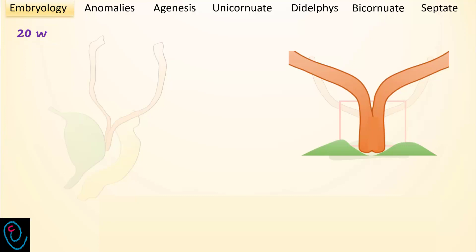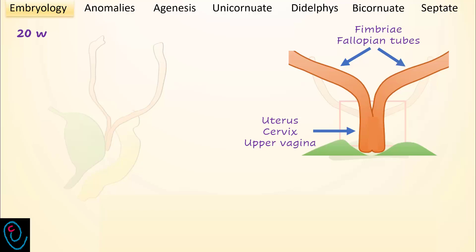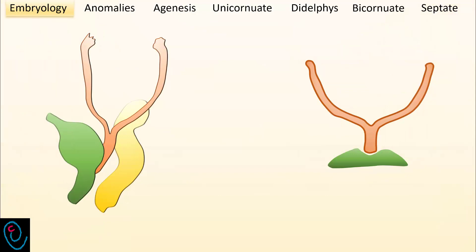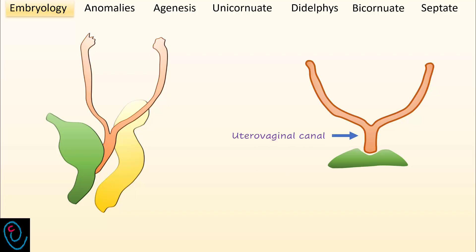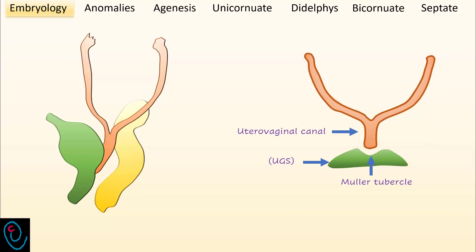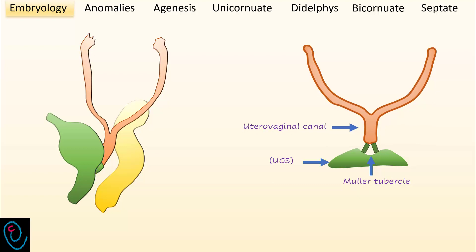The fused part of the Müllerian ducts will form the uterus, cervix, and upper vagina, while the unfused portion will develop into the fimbria and the fallopian tubes. Regarding the formation of the lower part of the vagina, the uterovaginal canal, which inserts into the dorsal wall of the urogenital sinus at Müller's tubercle, will stimulate two solid outgrowths known as sinovaginal bulbs.